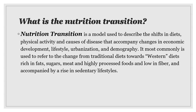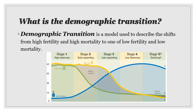Before we delve more into the nutrition transition, there are a few other definitions that will help us understand these things better. The demographic transition is a model used to describe the shifts from high fertility and high mortality to one of low fertility and low mortality. Stage one of the demographic transition model is characterized by low population growth rate due to a high birth rate and high death rate. Because the birth rate and death rate are relatively equal, there is little change in the total population, and today no country is classified as stage one.